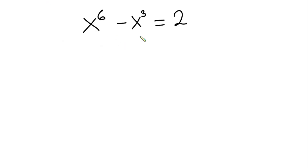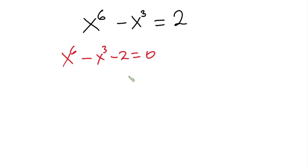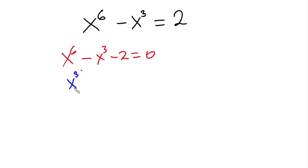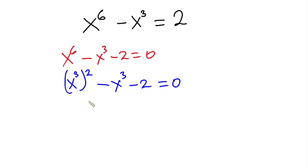First of all, I will equate everything to zero, so we have x to the sixth power minus x to the third power minus 2 is equal to zero. From here I'll break this down to make it easier, so I'll rewrite this as x to the third power, all to the second power, minus x to the third power minus 2 is equal to zero.